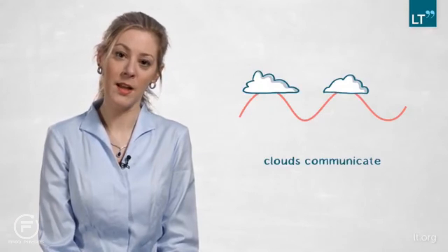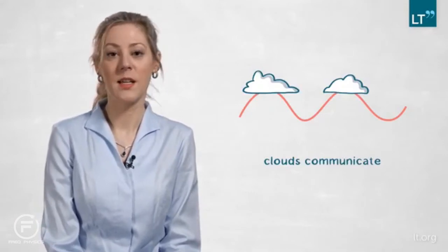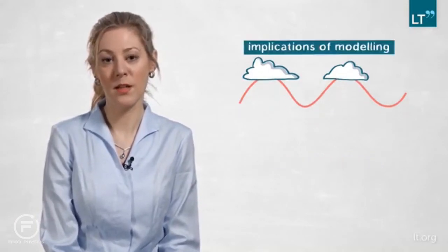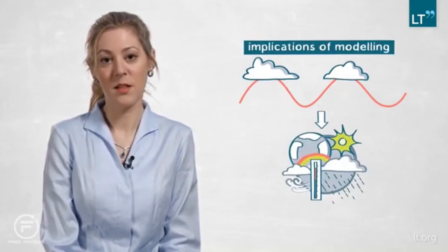This intertwinement between the cloud field and the wave field has some implications for the modeling of weather and climate. Coarse models with grid scales of let's say 100 kilometers are not able to resolve the sources of the waves, the waves themselves or the potential impact of the waves on convection. While I cannot say at this point how important this process really is, or whether it would massively improve our models, I think it is worthwhile to find out.